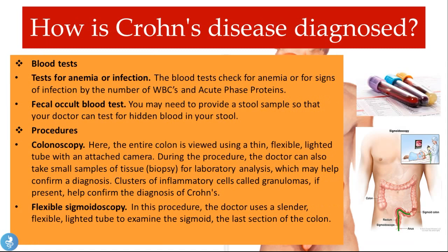Crohn's disease is diagnosed through several methods. Blood tests can check for anemia or infection via white blood cell count and acute phase proteins. A fecal occult blood test looks for hidden blood in the stool. For procedures, a colonoscopy allows viewing of the entire colon using a thin flexible lighted tube with a camera; small tissue samples can be taken for laboratory analysis, and clusters of inflammatory cells or granulomas if present can help confirm the diagnosis.